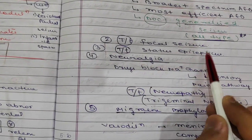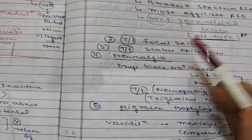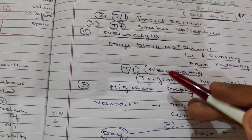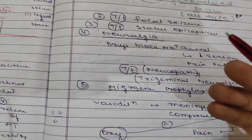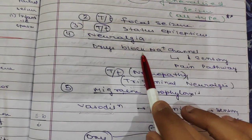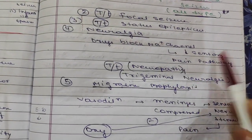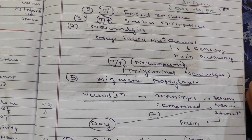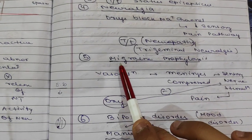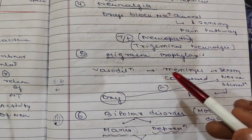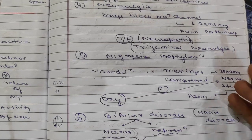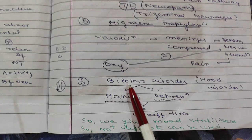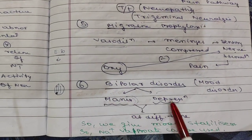Additional indications include treatment of status epilepticus and neuralgia. Since the drug blocks sodium channels and prolongs their inactivation, it decreases sensory pain pathways and can be used for neuropathy and trigeminal neuralgia. The fifth indication is migraine prophylaxis, achieved by inactivating sodium channels.